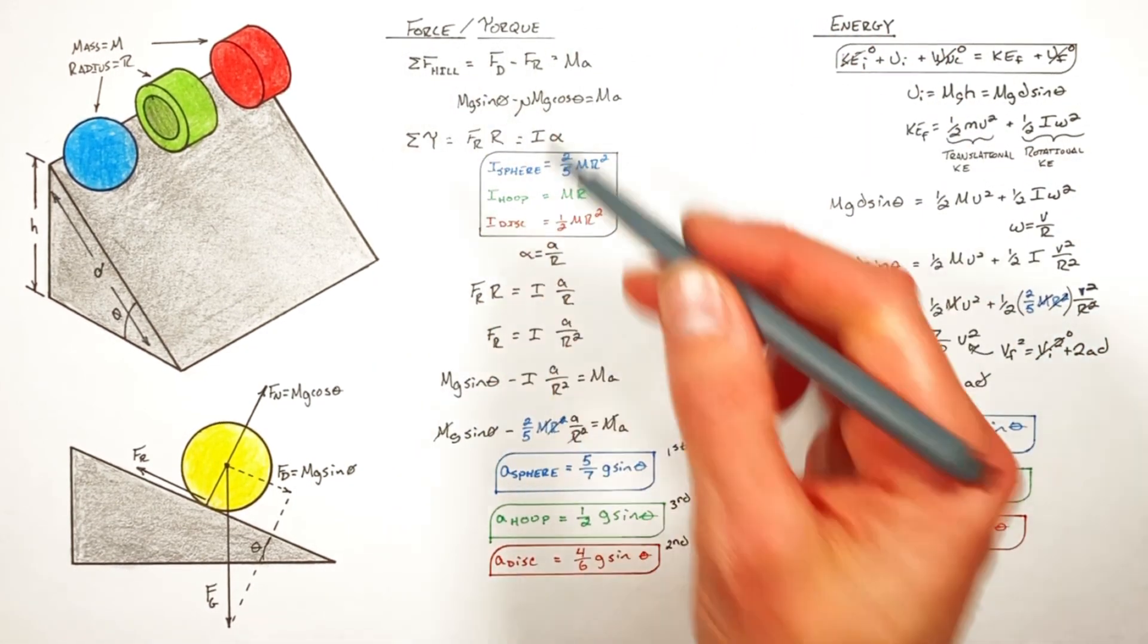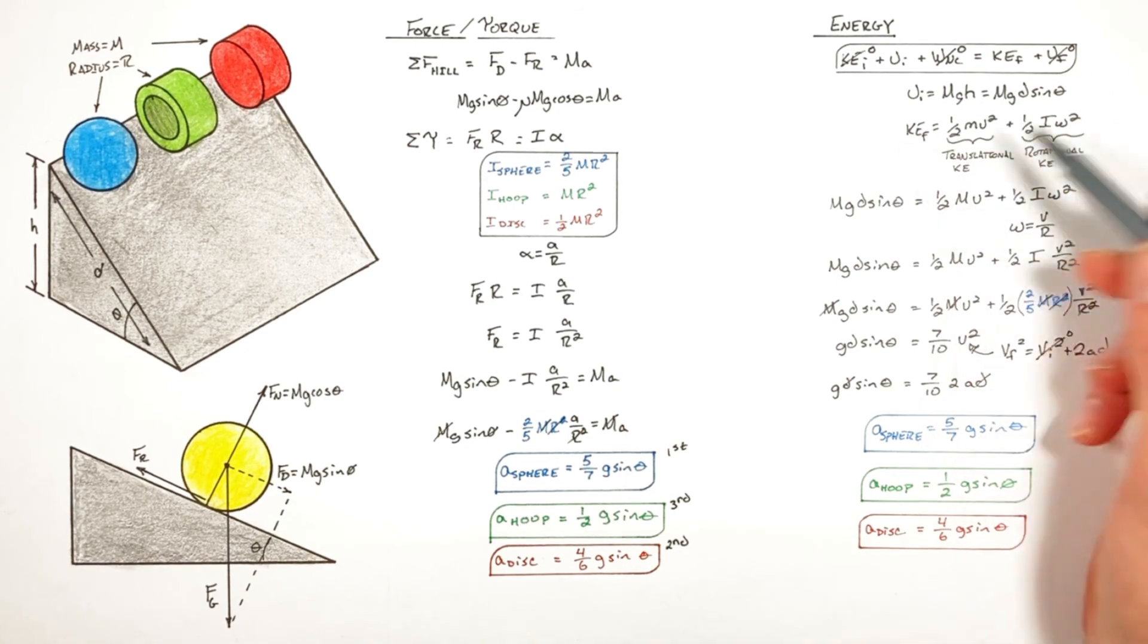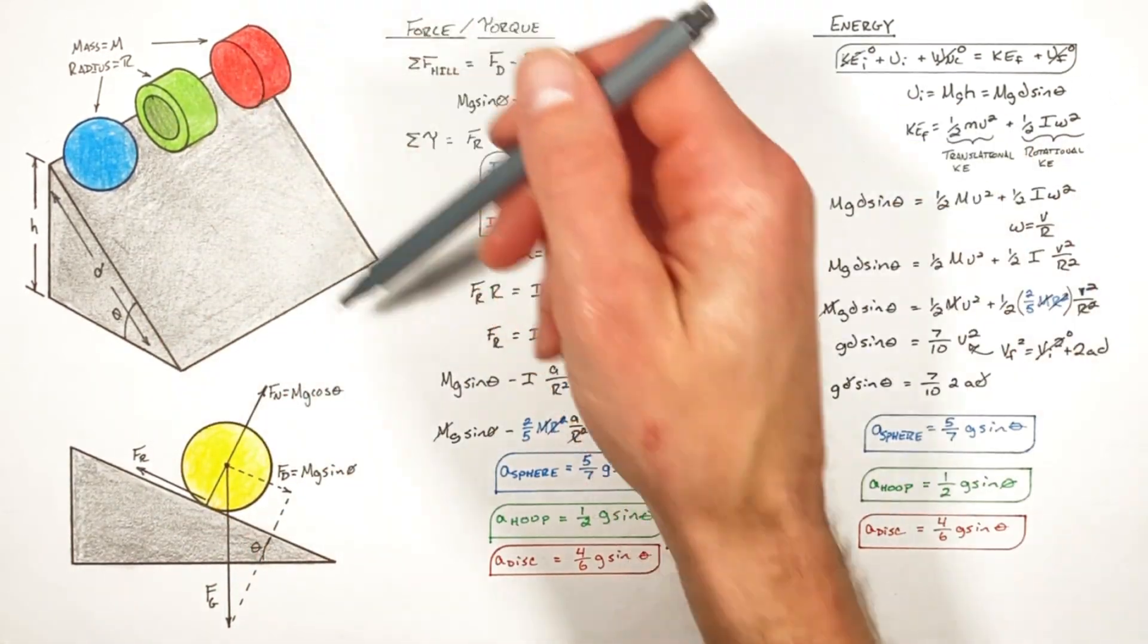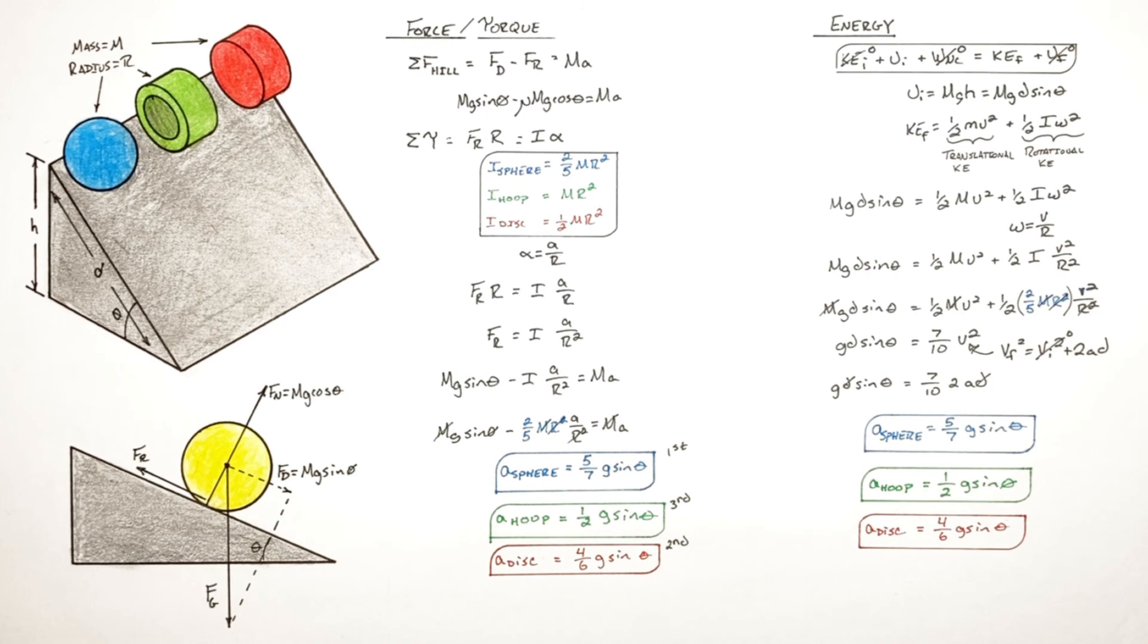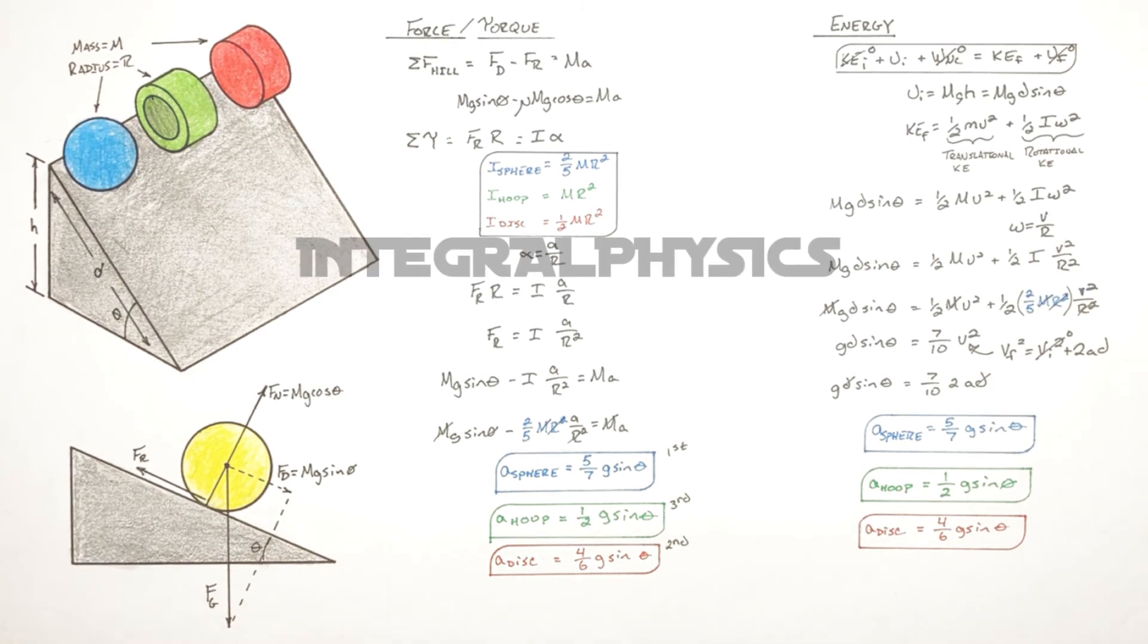So ultimately this has been the sphere, hoop, and disc rolling down the hill. I hope you found this useful, and on that note, that's all for now.